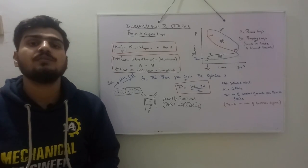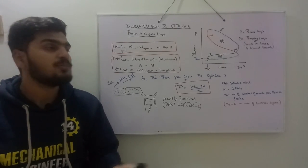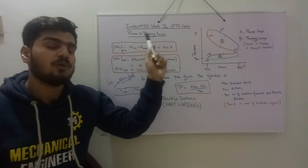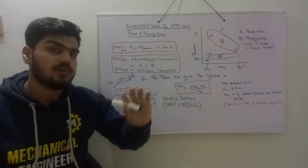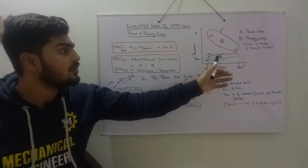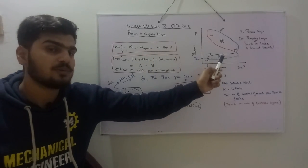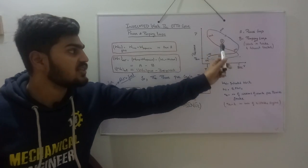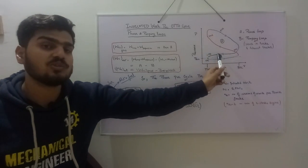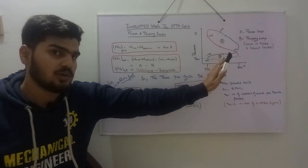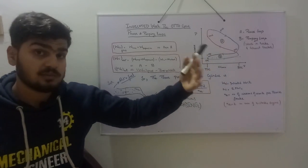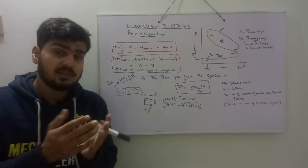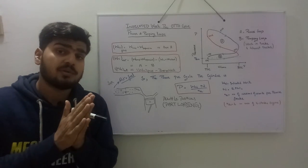In this video I'm going to explain the indicated work per cycle. Here you can see the Otto cycle in which the intake, compression, expansion, and exhaust strokes are shown. Let's start — what is the indicated work per cycle?